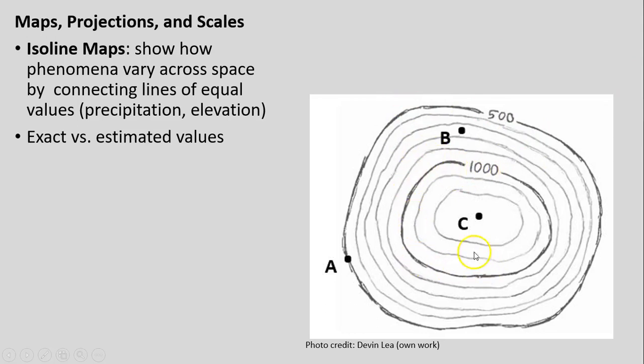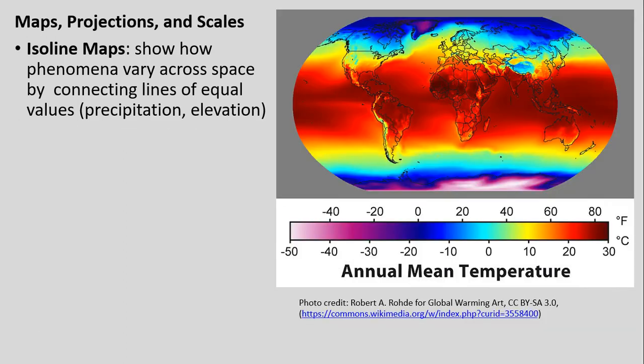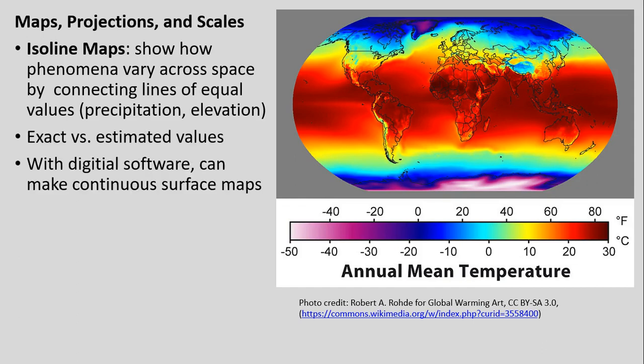Similarly, location C is above the 1,200 line and below 1,300, so the elevation at C could be anywhere between 1,201 and 1,299 — that's just an estimated value with a whole possible range. It's also worth noting that with digital software today, we're increasingly seeing maps that make continuous surfaces without necessarily using ISO lines at all, varying continuously based on a color scale.